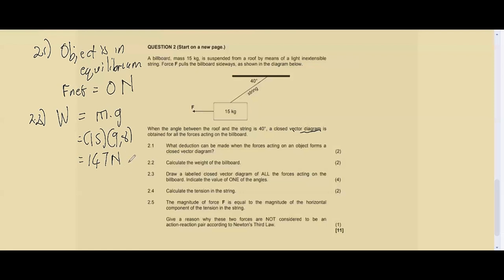Question 2.3 says draw a labeled closed vector diagram of all the forces acting on the billboard, indicating the value of one of the angles. I've already taught you that every time you draw a closed vector diagram, start with weight because it is that vertical force going downward. Label it W for weight.